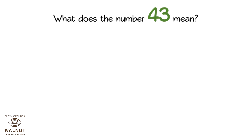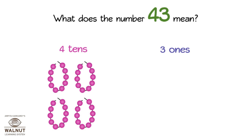What does the number 43 mean? It means there are four tens and three ones. Let's show this as beads. Now if we break apart one ten,